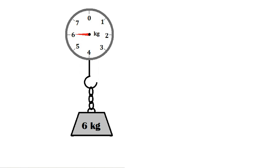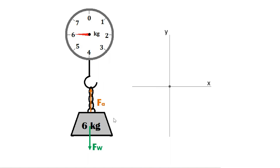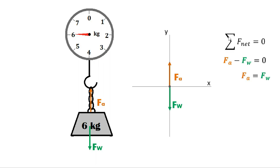To better understand with a free body diagram: looking at the object, we can assume there are two forces acting on it. First, the gravitational force — the weight — and the force applied by the scale, which could be tension, spring force, and so on. Since this is in equilibrium, the force applied by the scale is equal to the weight of the object. So using the equilibrium formula, the summation of forces equals zero: force applied upward minus force of weight downward equals zero, meaning the force exerted by the scale equals the weight of the object.